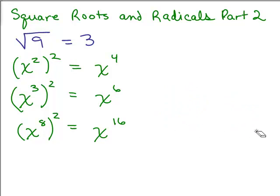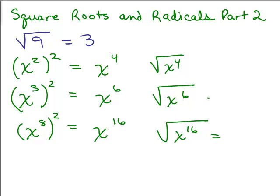So I squared some things and got x to the fourth, x to the sixth, and x to the sixteenth. All of those are perfect squares. The question is: what is the square root of each of these? The square root of x to the fourth is x squared, because I took x squared and squared it to get x to the fourth. X to the sixth is slightly trickier — it was x cubed squared that gave us x to the sixth, so this should be x cubed.